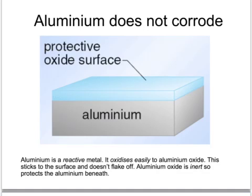Aluminium items can be left out in all weathers and will not appear to corrode very much. This is because aluminium, being a reactive metal, combines with oxygen in the air to form a layer of aluminium oxide. This layer sticks very closely to the surface and is very inert, meaning unreactive. It stops any further corrosion of the aluminium and protects it.